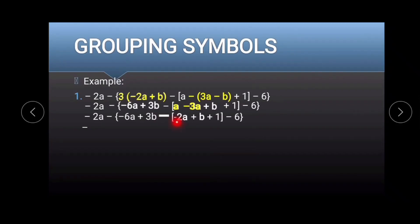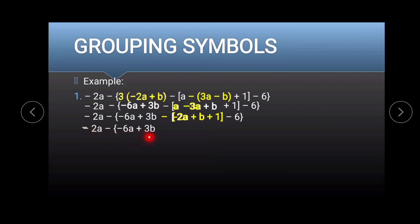Since we haven't eliminated the bracket yet, we distribute the negative sign to negative 2a plus b plus 1. So we have negative 2a minus 6 minus negative 6a plus 3b. Negative times negative 2a gives positive 2a, negative times positive b gives negative b, and negative times positive 1 gives negative 1. Then copy negative 6.